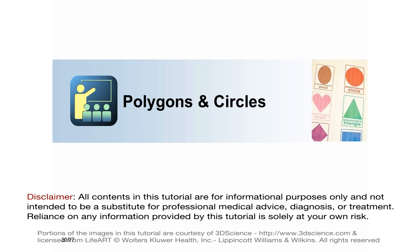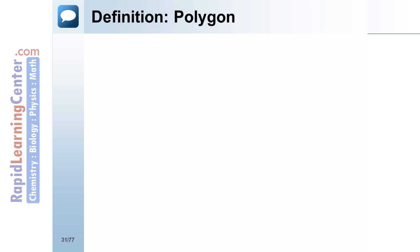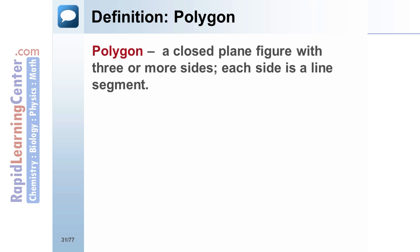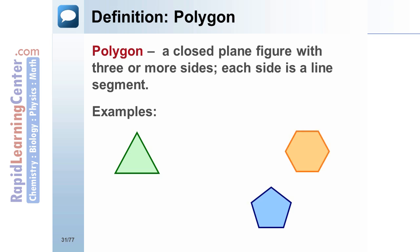The next section will discuss polygons and circles. A polygon is a closed plane figure with three or more sides. Each side of a polygon is a line segment. Examples include the triangle, pentagon, hexagon, octagon, and quadrilateral.